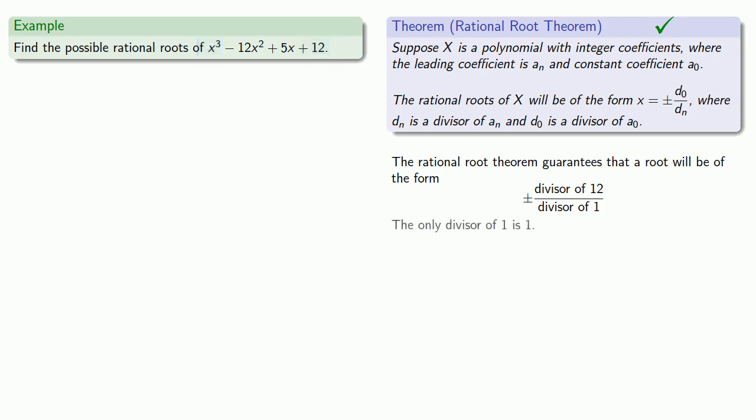Well, the only divisor of 1 is 1, so our denominator has to be 1. Our numerator could be a divisor of 12, and so the divisors of 12 are... And so that means our possible roots are plus or minus 1 over 1, plus or minus 2 over 1, plus or minus 3 over 1, 4 over 1, 6 over 1, and 12 over 1, or we might simply just reduce that plus or minus 1, plus or minus 2, 3, 4, 6, or 12.